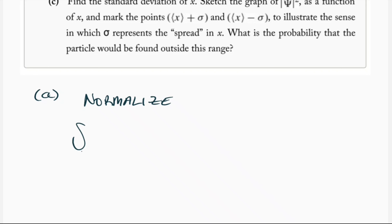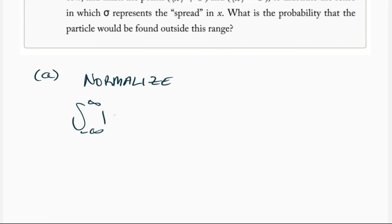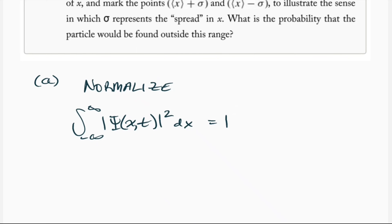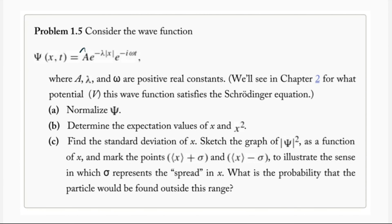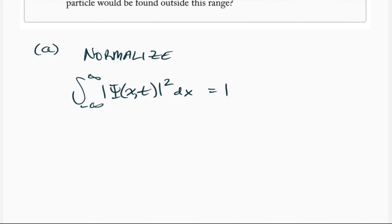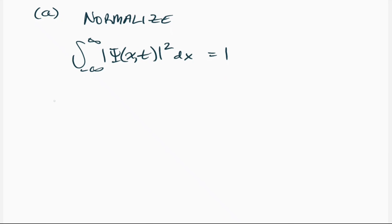To normalize the wave function, we are going to do what we always do when we normalize. We take the integral from negative infinity to infinity — by definition of the wave function — of |psi(x,t)|² dx and set that equal to 1. That will allow us to solve for the normalization constant A.